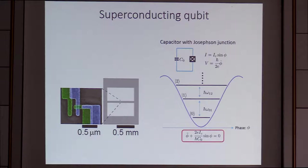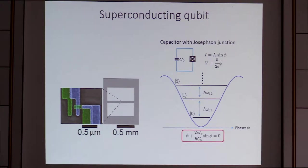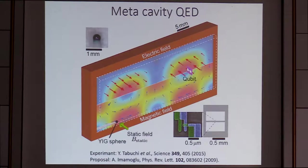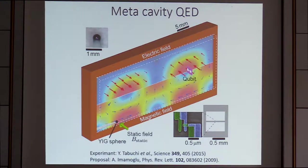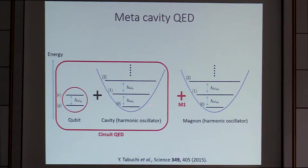This is a picture of the superconducting qubit — basically aluminum. In between we have a Josephson junction. This part corresponds to the capacitance, and the Josephson junction is a nonlinear inductance. This is an SEM false color image of the Josephson junction. We place this superconducting qubit at the antinode of the electric field of the cavity, while the YIG sphere is placed at the antinode of the magnetic field of the cavity, and let them interact.